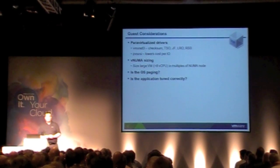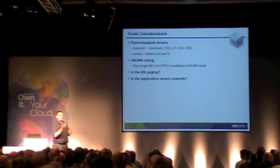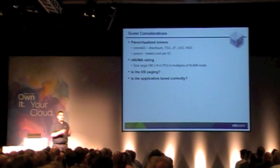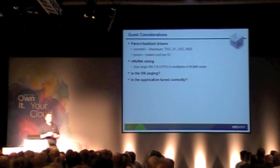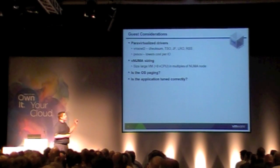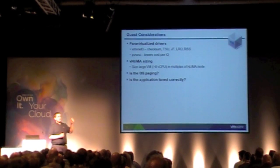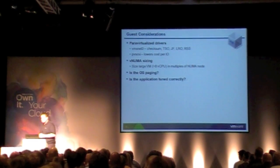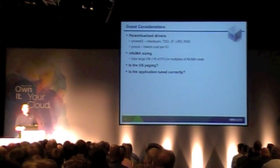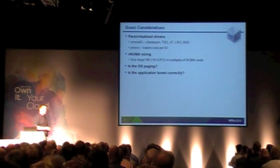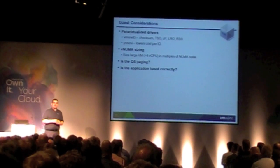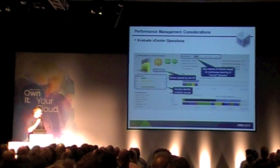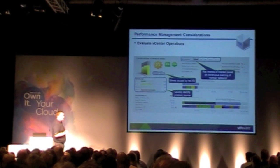Even if the ESX host isn't swapping, if you undersize the guest VM there's a chance the operating system is using its swap or page file — and when that happens we're going to disk and performance drops off. That has nothing to do with virtualization, but the VM admins get blamed. Finally, application owners need to take responsibility too: if they're asking for an eight-way VM, they should confirm their application is actually using eight threads, not just requesting it because it sounds good.